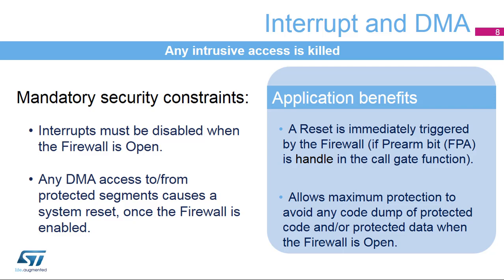Specific constraints must be respected when enabling the firewall. Interrupts must be disabled from the call gate entry sequence until the firewall switches back to the closed state. If an interrupt service routine or ISR occurs, the firewall generates a reset. All DMA access to and from the protected segments is not allowed and is rejected by the firewall. The application benefits are mainly to detect an intrusion faster during the protected code execution and to offer a very high level of protection against code dumping using the DMA.